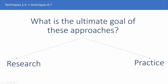After considering techniques one to four with examples and experimental results, the question is what is their final goal and where they are leading. Here we discovered another dimension represented by operators who practice these techniques — they were interested in specific practical questions. And finally, techniques six and seven appear as a combination of potentially interesting research goals and questions asked by operators.